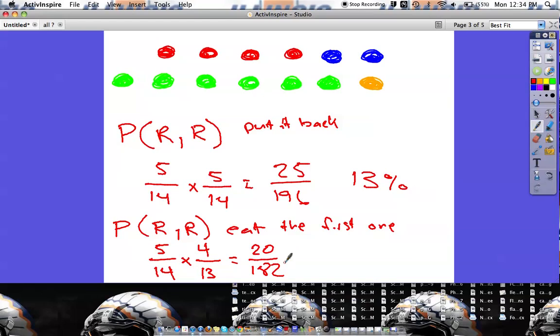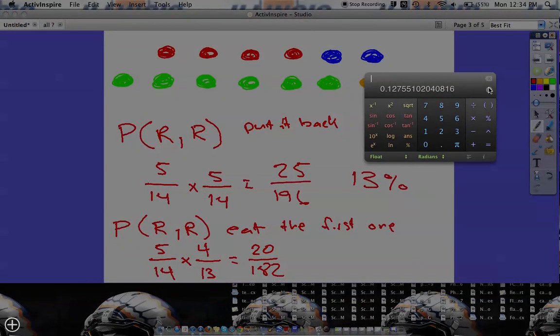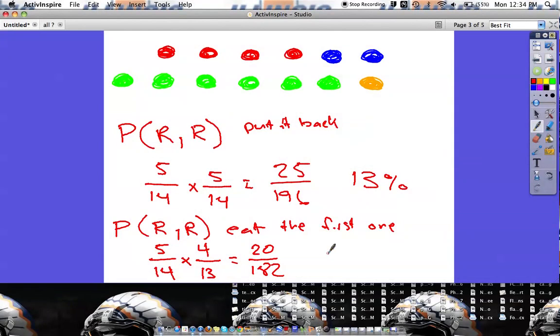So now if I find that as a percentage, that's just going to be twenty out of one eighty-two, which is going to be ten percent. There's a nine there, so we'd probably round that up to even eleven percent. Just a little bit different chance.